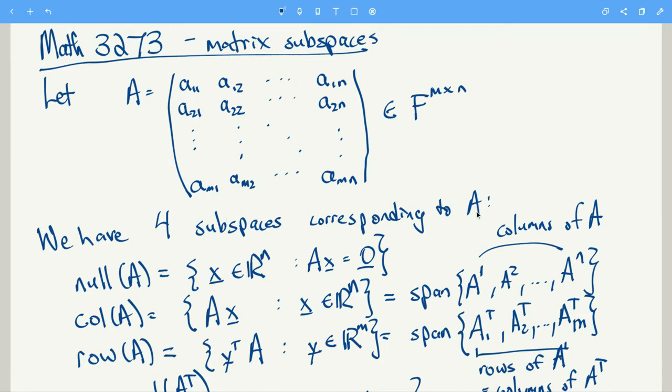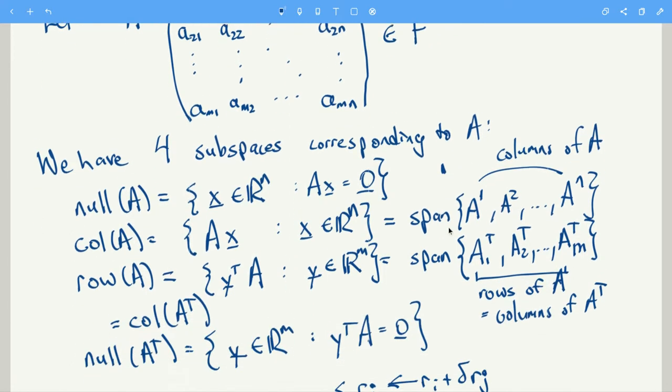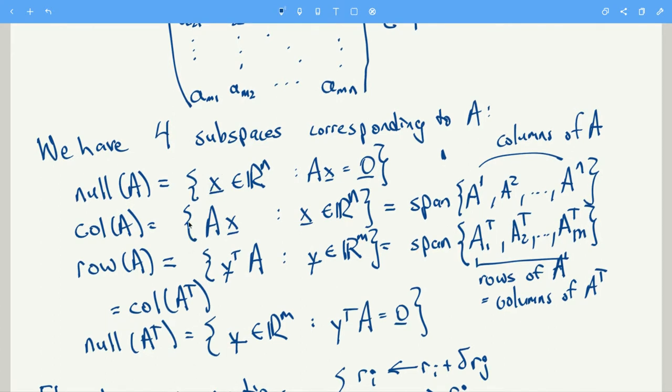And if we fix A, we have four subspaces which we can get from it. The first, in no particular order, we have the null space of A. That is all the column vectors in RN such that AX equals zero. So that's our first subspace.